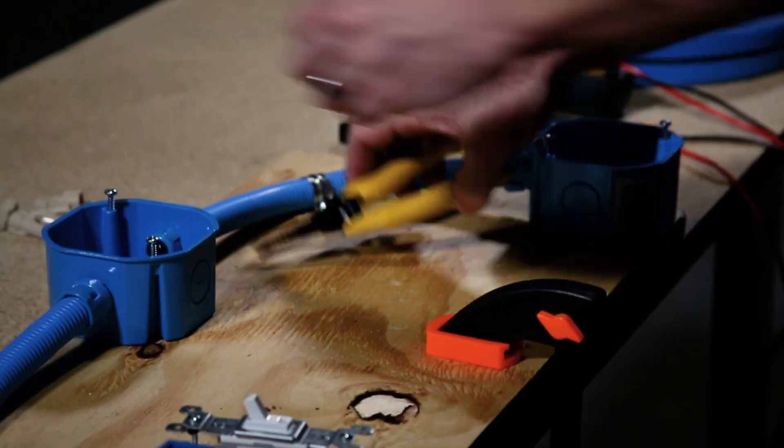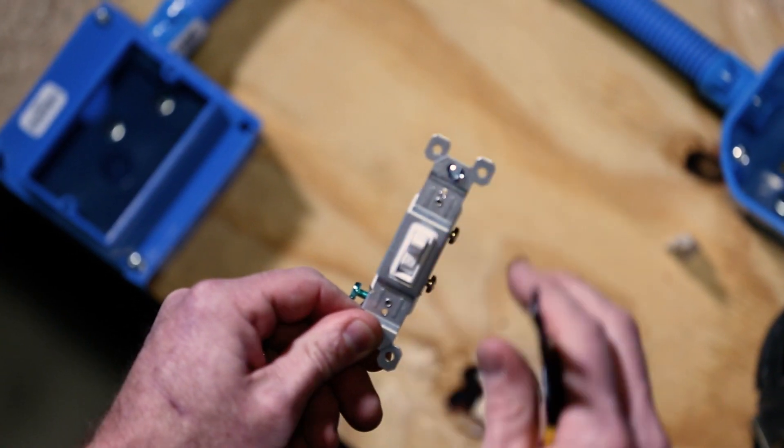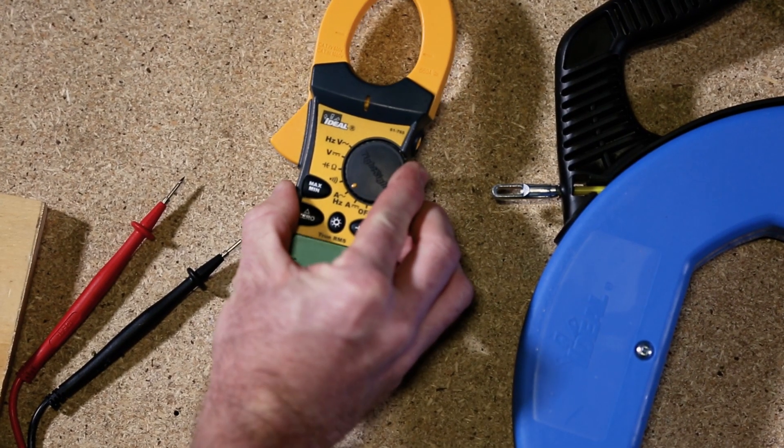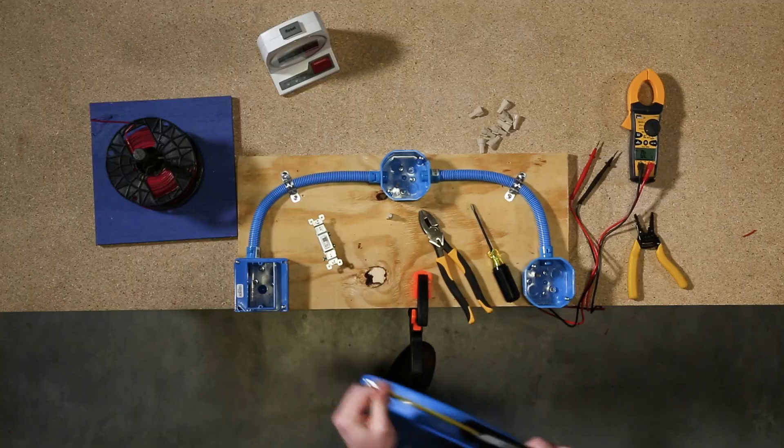First, get your workspace set up however you like it. Make sure the switch is in the on position and the Ideal TightSight clamp meter is turned on. Once you're ready, hit the red button on the time clock and your challenge will begin.